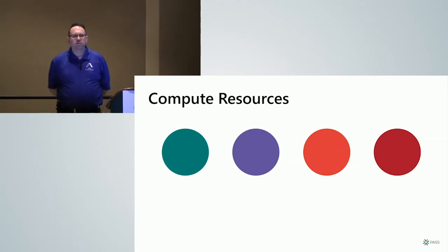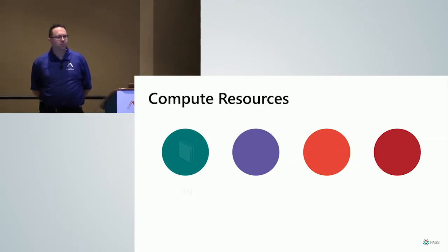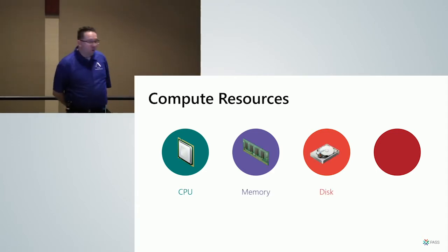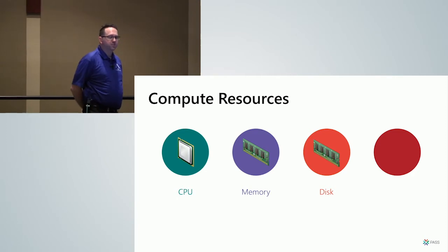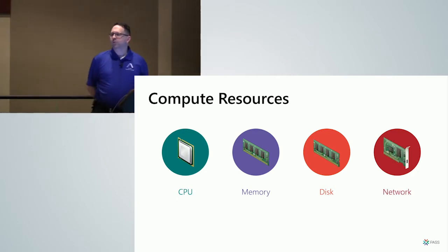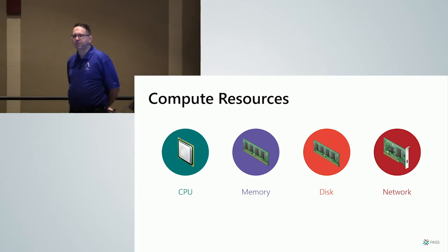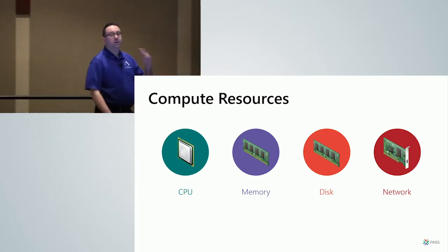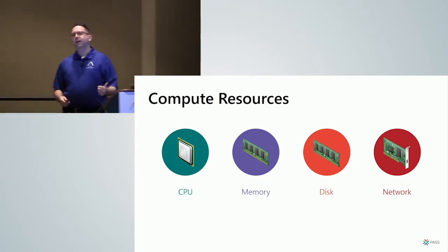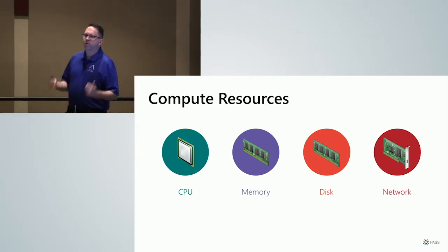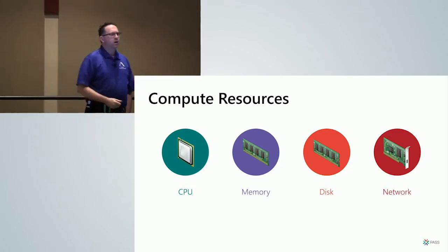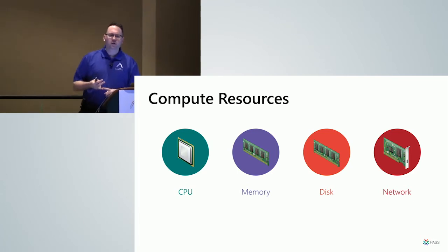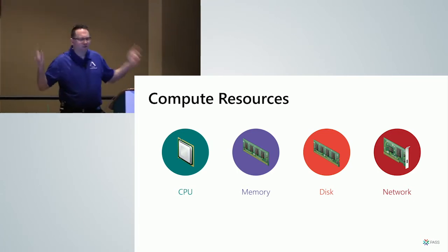We're going to start with the four main food groups: CPU, memory, disk — and hopefully by now you're all on flash — and the network. When I tell people in this crowd what the four main food groups are, it's usually caffeine, pizza, and sugar, with caffeine in there twice because that's really important. At the end of the day, all we're dealing with are these four things. Everything else is buzzwords, acronyms, availability features. This is what matters.